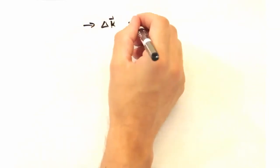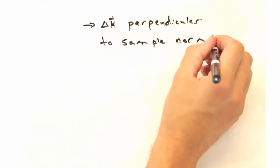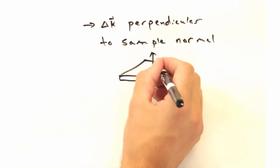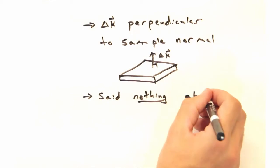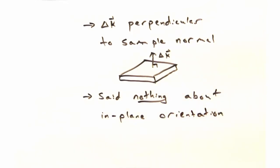But if delta k is perpendicular to the sample normal, which so far it has been, this type of scan won't tell us anything about the in-plane orientation. But luckily, we'll cover that technique in the next video.